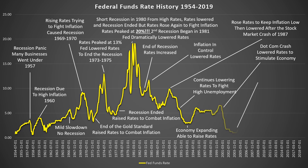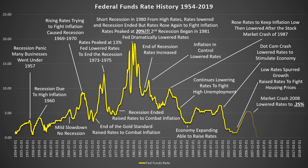During this long expansion, the dot-com crash of 2000 to 2001 caused the Fed to lower rates to help stimulate the economy. Low rates then spurred growth and rates were risen in 2004 to 2006 in order to help control housing prices. The market and housing crash of 2008 caused the Fed to lower rates again down to a quarter of a percent for a long while. Finally, the Fed began to raise rates with growth of the economy, but has now lowered again with fear of a slowing economy.